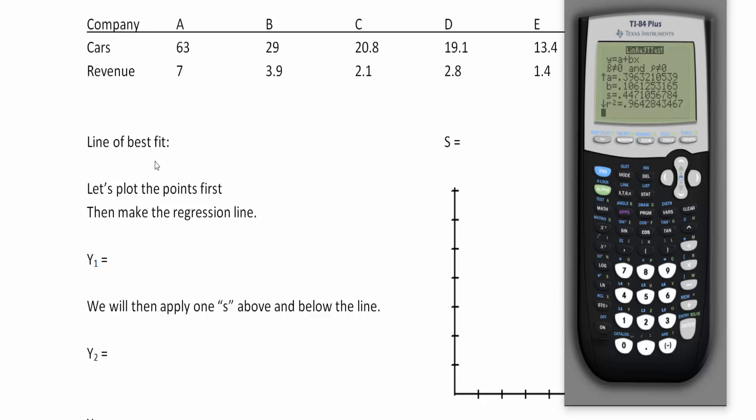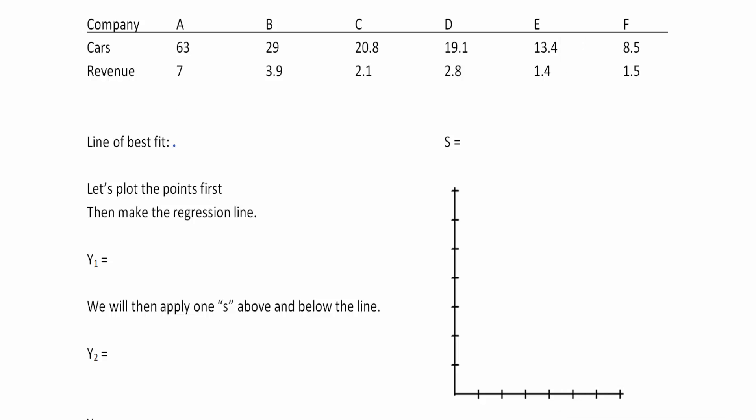We're going to round it to two decimal places. Our a value is 0.39, which rounds to 0.4, and our b will round to 0.11. So the line of best fit is 0.4 plus 0.11x, and our s is 0.45.